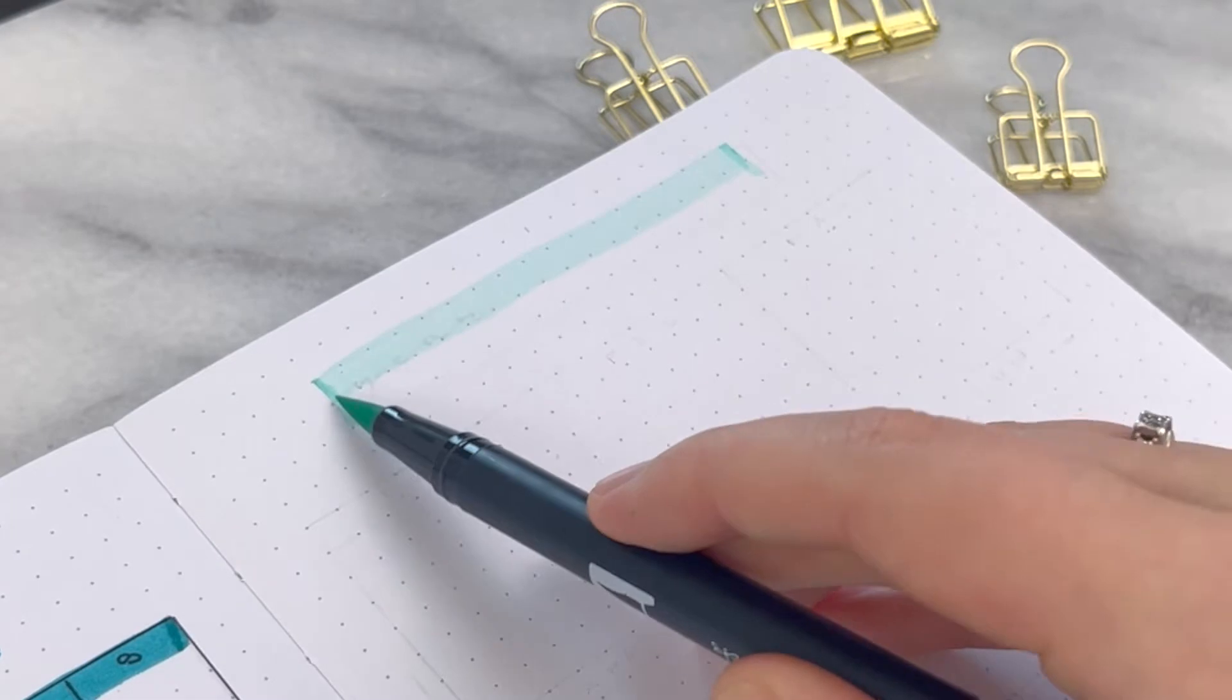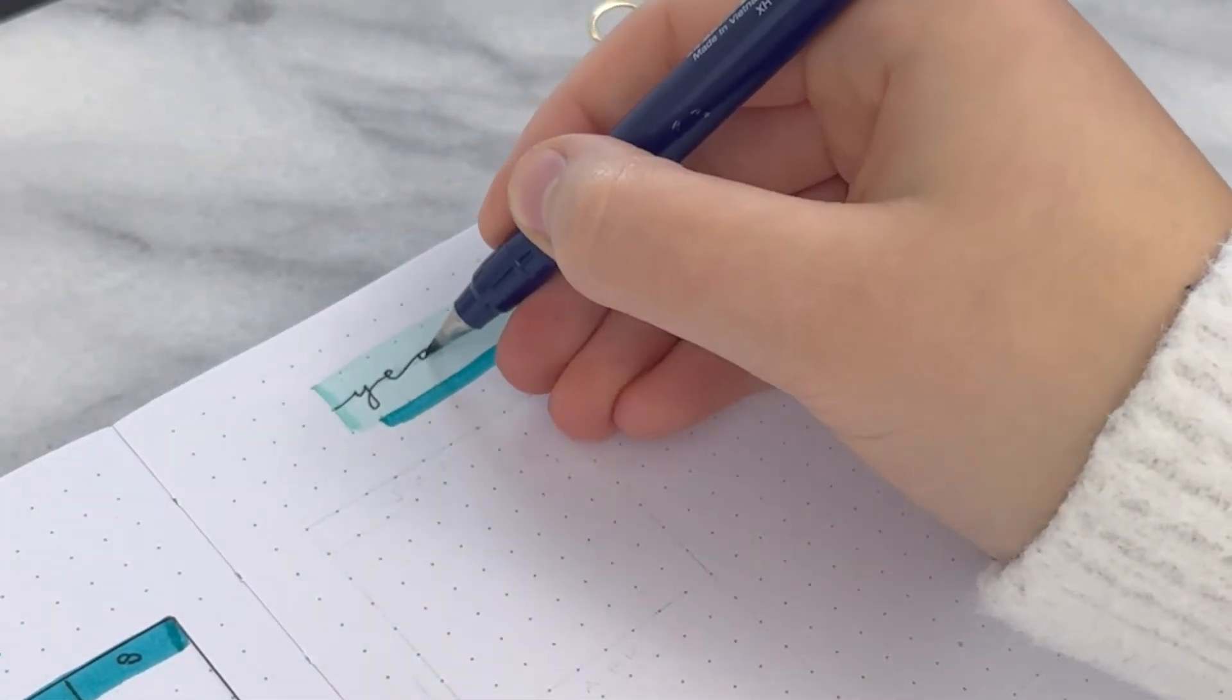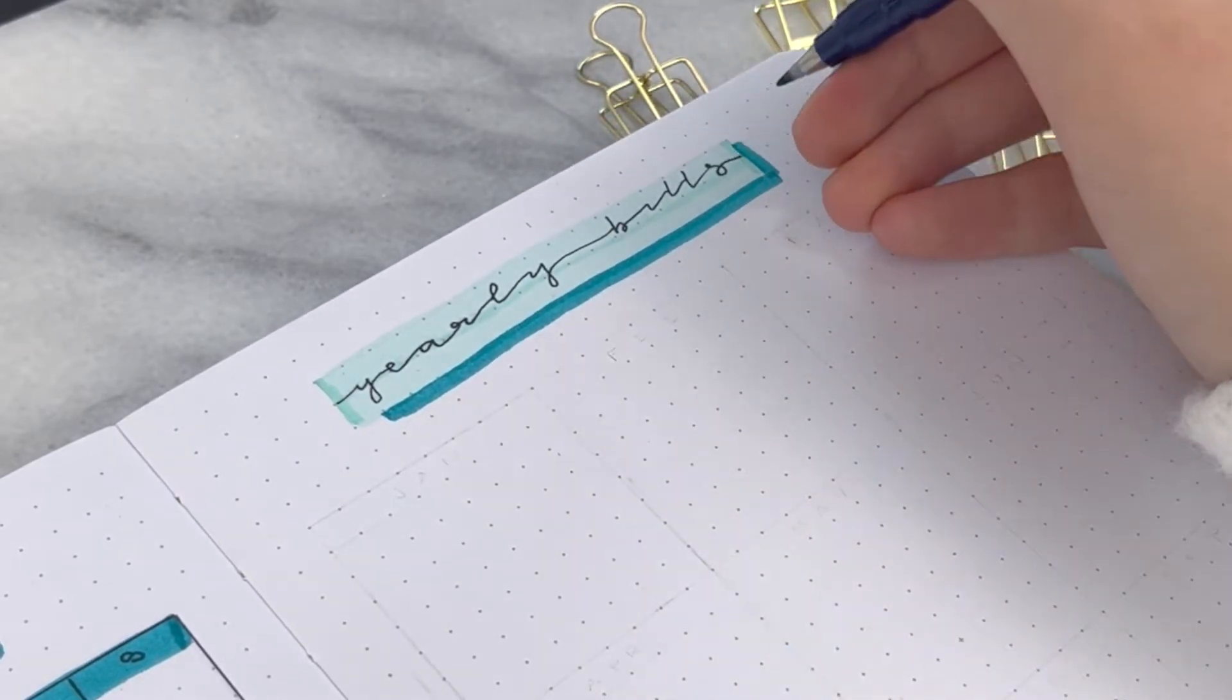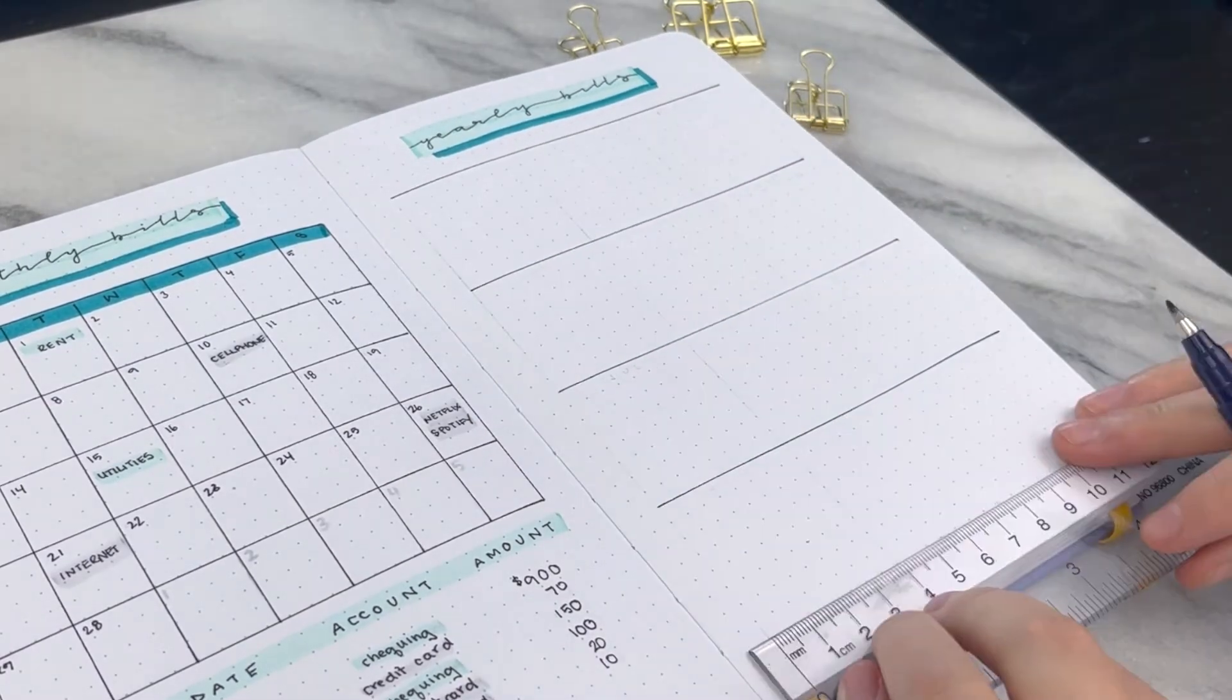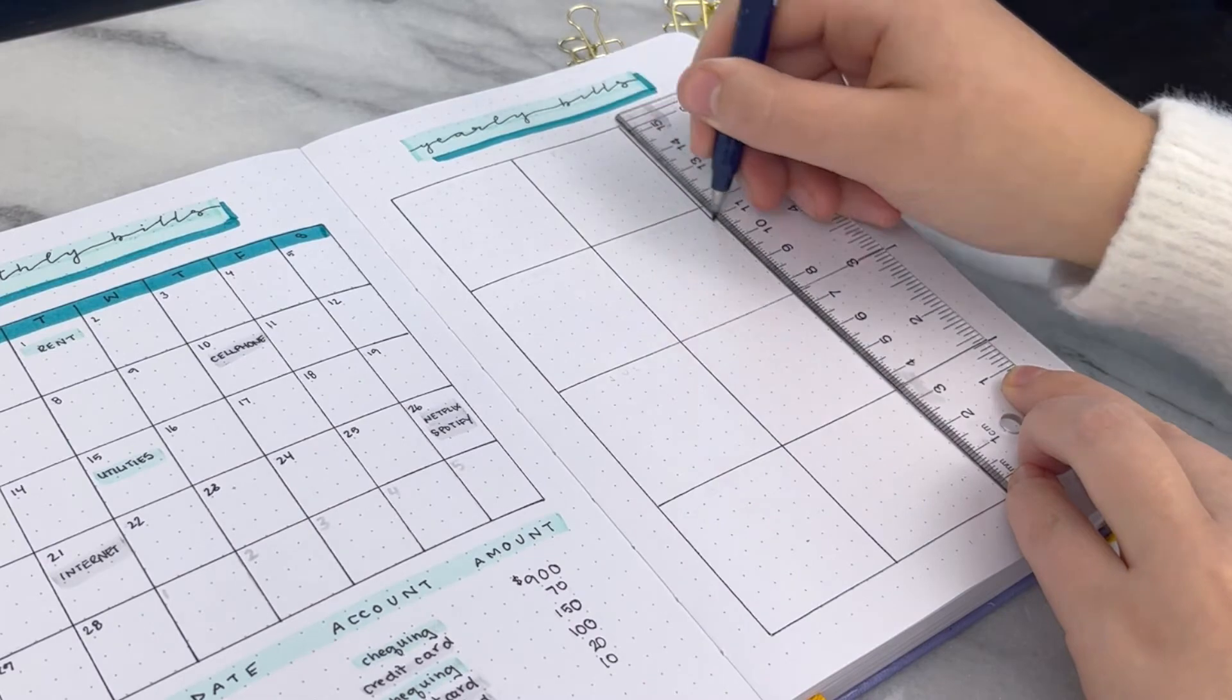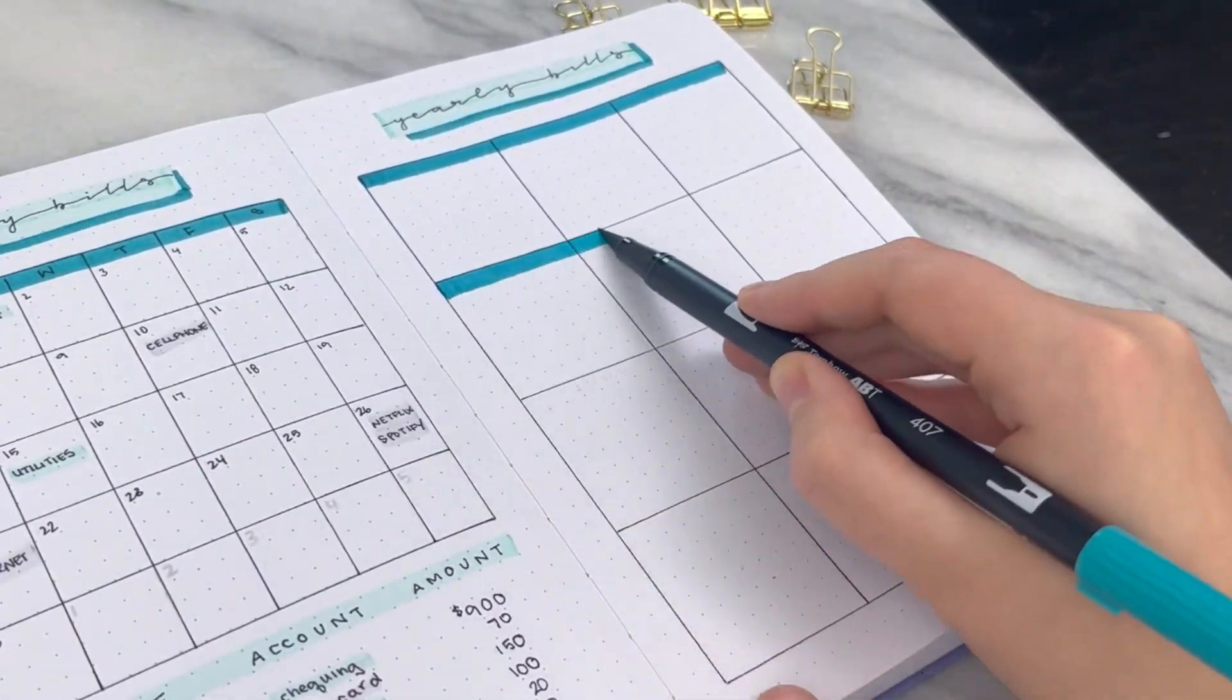Now if you're a beginner to financial self-care or finance tracking in general, you have these things called yearly bills and I put bills in quotation marks this time because they're not something that you would necessarily think of as an expense or a yearly bill because they're not things like a cell phone bill but they do happen throughout the year and will need to be considered when you're creating different financial trackers within a finance journal.